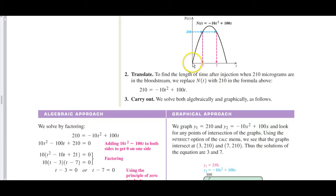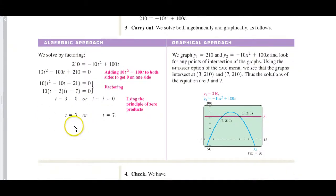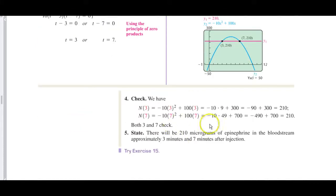So as we see it in the curve, it starts at none. You inject, it builds up, it peaks there. They're not asking us for when it peaks. They're just asking when it has this level, 210, which is what they have here. And again, those would be your answers. They state it nicely. You'll have 210 milligrams of epinephrine in the bloodstream approximately 3 minutes and 7 minutes after the injection.